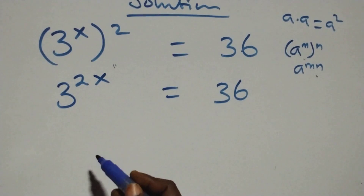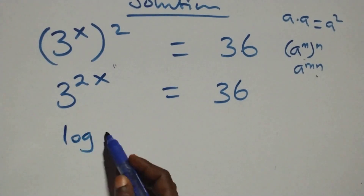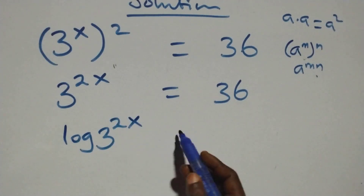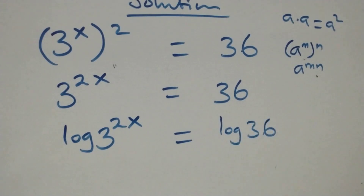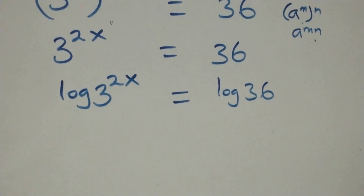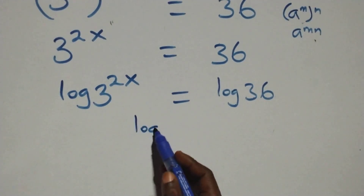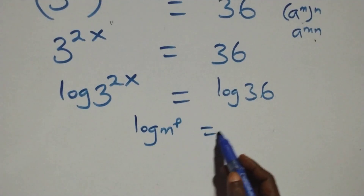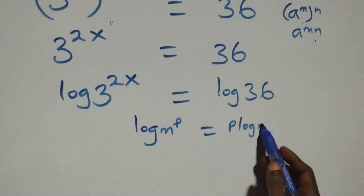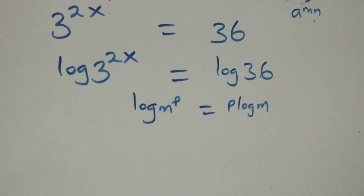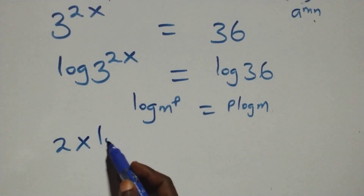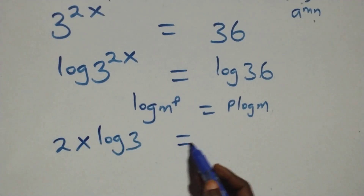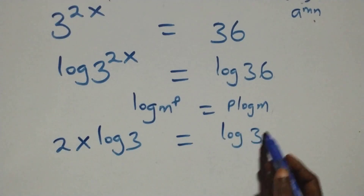Then here we apply log on both sides — that is, we have log of 3 raised to power 2x equals log 36. Then here we apply the power rule of log: when we have log m raised to power p, this is the same thing as p log m. At this here, the power is 2x, and all we have here becomes 2x log 3 equals log 36.